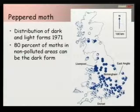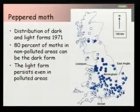So why are they there? Surely they'd all been eaten by the birds, so they'd be much less than 80%. This is the first problem with the story — the light form persists even in polluted areas.